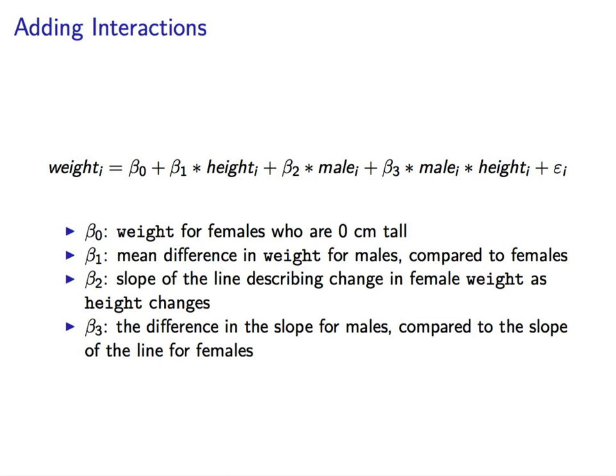Beta 2 is the slope of the line describing the change in female weight as height changes. So on average, when comparing a female with another female who is one centimeter shorter than she is, she will weigh beta 2 kilograms more than the shorter female. Again, on average.